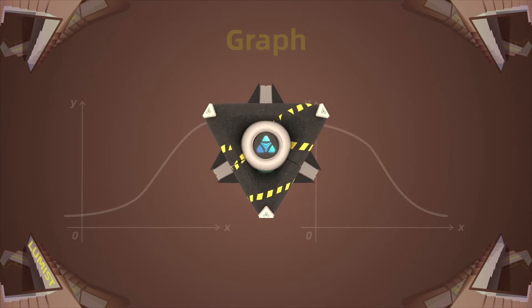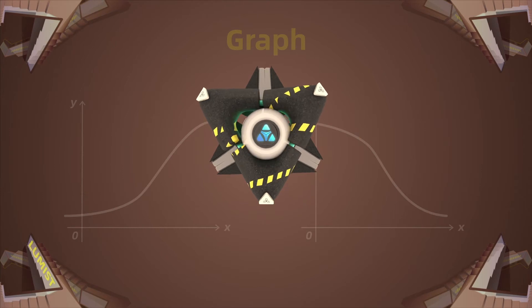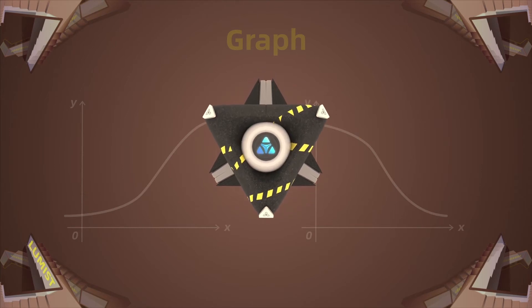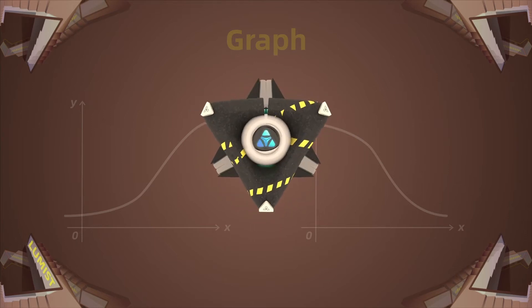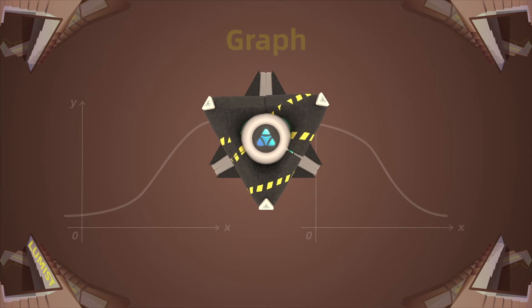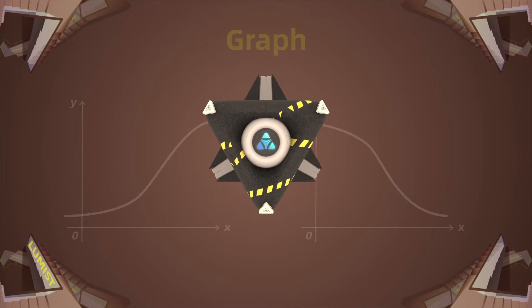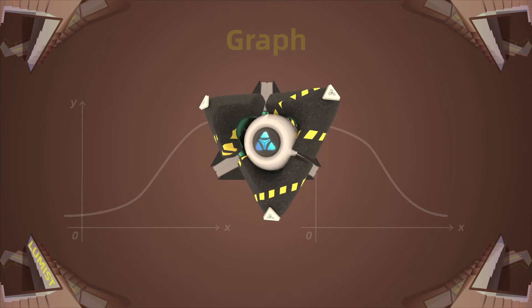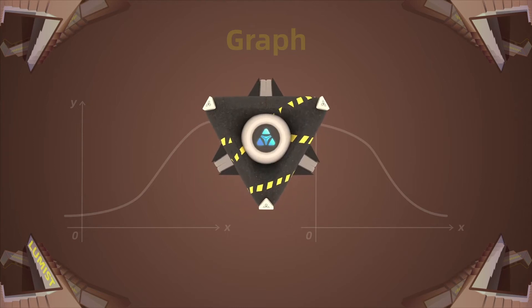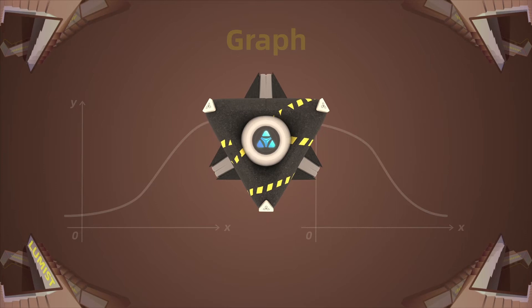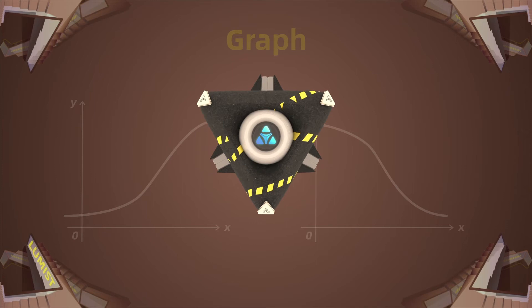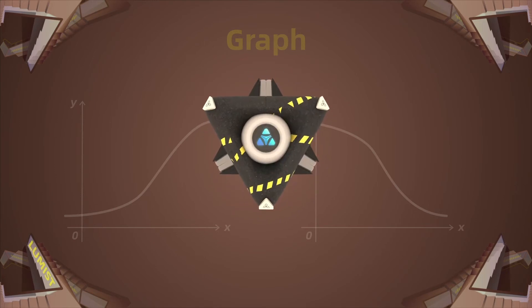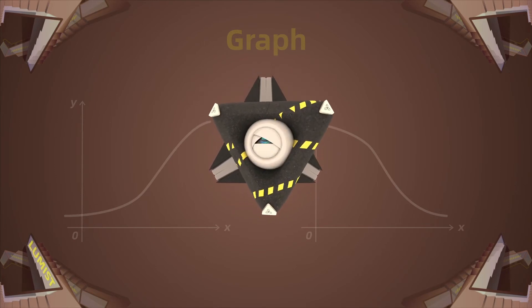Recall that a derivative at a point is equal to the slope at that point. So if the derivative at a point is greater than 0, then the slope at this point is greater than 0. If the derivative is greater than 0 on an interval, it means that the slope of every point on that interval is greater than 0, and we can say that the function is increasing on this interval. Similarly, if the derivative is less than 0 on that interval, it means that the slope at every point is less than 0, and the function is decreasing on that interval.